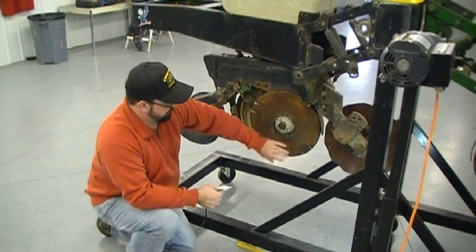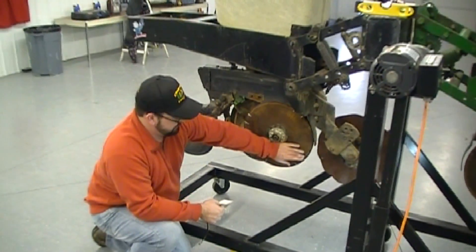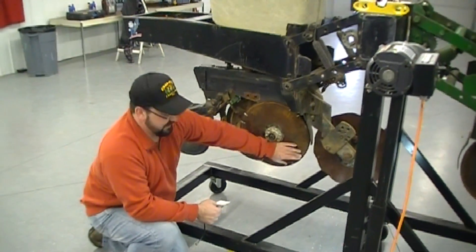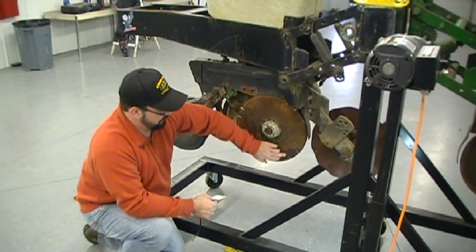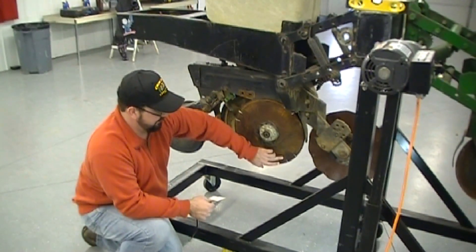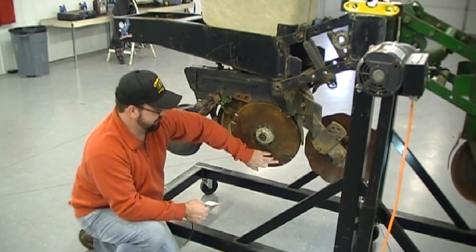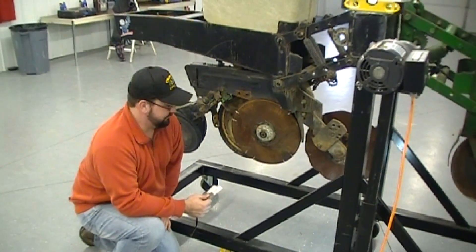Our goal here is to make sure we have adequate contact of the two disc openers at the front edge. That's what's going to create our true V in the trench. If these are too far out, we're going to end up with what we call a W bottom and we're going to have seat depth issues where our seat depth is going to be erratic across the field.